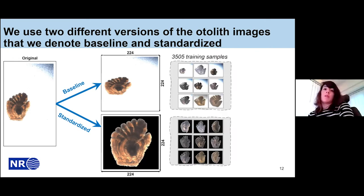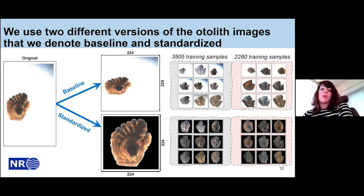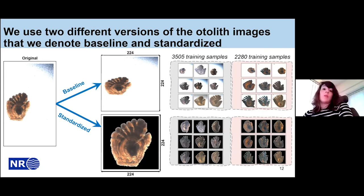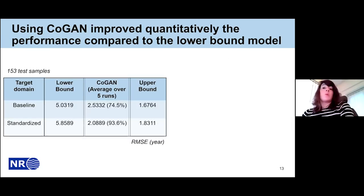We used a little more than 3,500 samples in the source domain and a little less than 3,000 in the target domain. A small validation set was used to choose hyperparameters. Once satisfied with the model, we repeated experiments for five different runs, keeping exactly the same parameters between models across all runs, and we report results on a target test set.